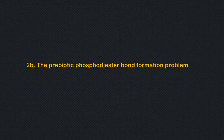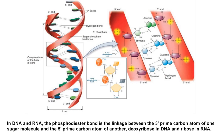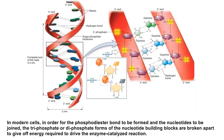The prebiotic phosphodiester bond formation problem: another major problem that origin of life research faces is how to explain the transition from monomer ribonucleotides to polynucleotides. Phosphodiester bonds are central to all life on earth, as they make up the backbone of the strands of nucleic acid in DNA and RNA. The phosphodiester bond is the linkage between the 3' carbon atom of one sugar molecule and the 5' carbon atom of another — the oxyribose in DNA and ribose in RNA. In modern cells, the three-phosphate or diphosphate forms of the nucleotide building blocks are broken apart to give off energy required to drive the enzyme-catalyzed reaction.